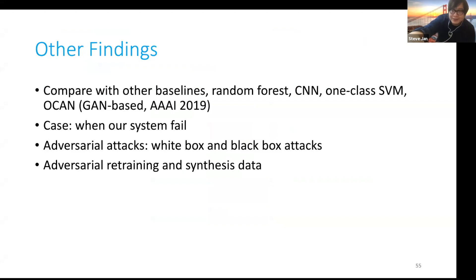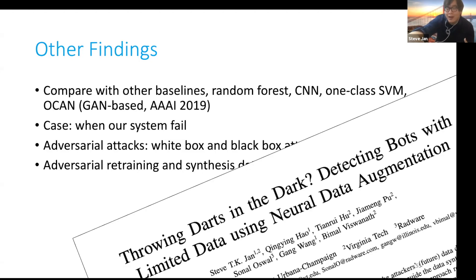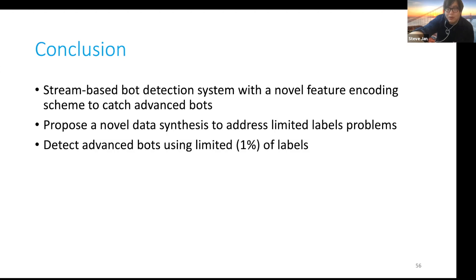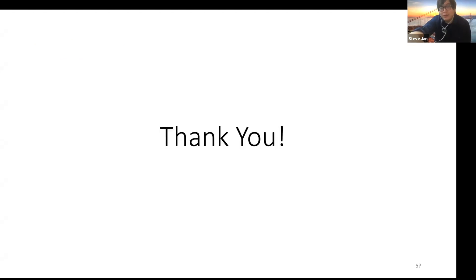We have other findings — for example, we compare other baselines beyond LSTM in the evaluation, and we do a deep dive to show when our system fails and analyze adversarial attacks. If you are interested, please take a look at our paper. In conclusion, we propose a shrink-based bot detection system with a novel feature encoding scheme to catch advanced bots that evade existing rules. We propose a data synthesis technique to address the limited label problem, and as a result we can catch bots with very limited labels. Thank you for watching, and I'm ready for questions in the live Q&A session.